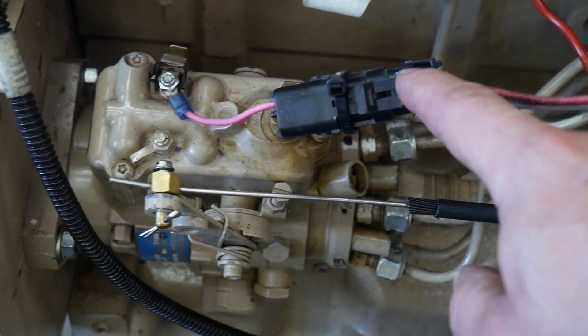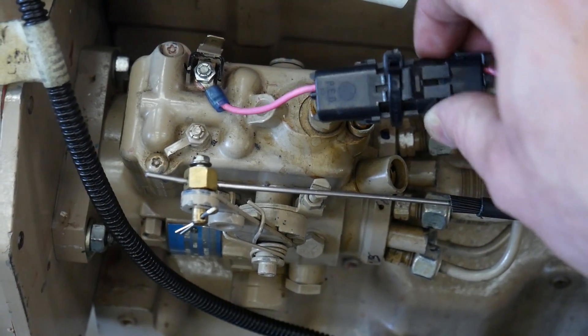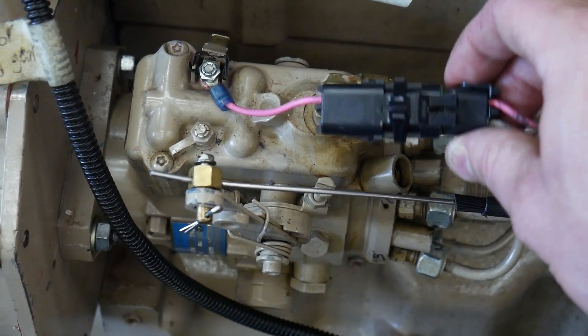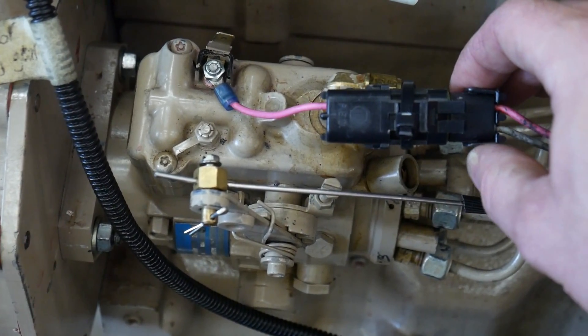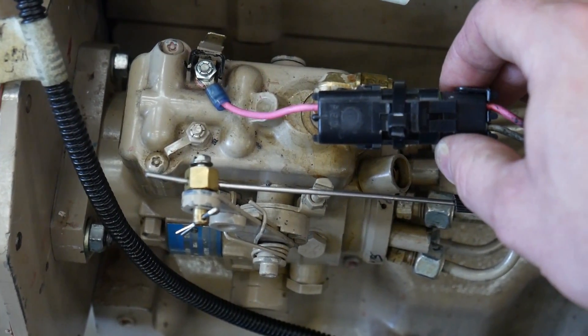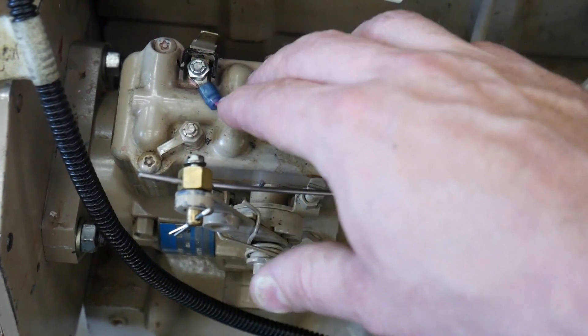You have 12 volts available right here in both the key position that's run as well as start. And this right here is our fuel shutoff solenoid, so anytime our engine's expecting to run, we should see 12 volts when we use our voltmeter.